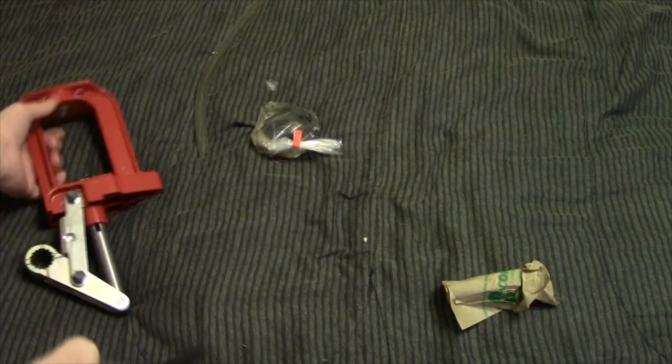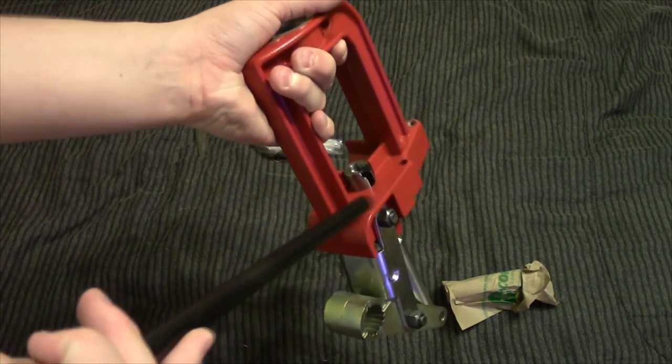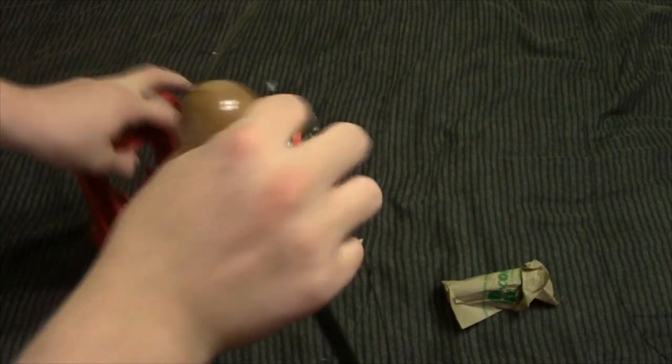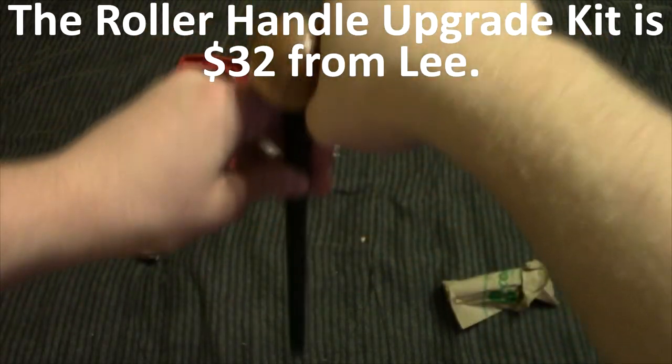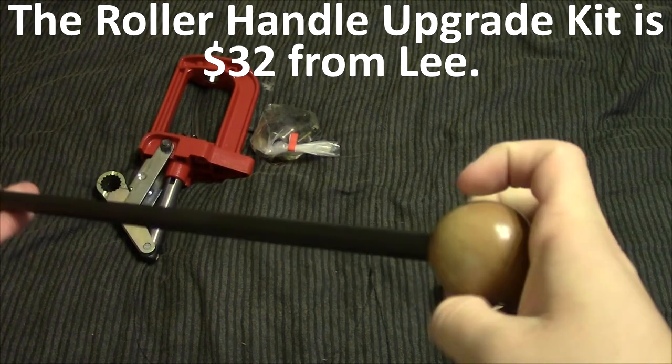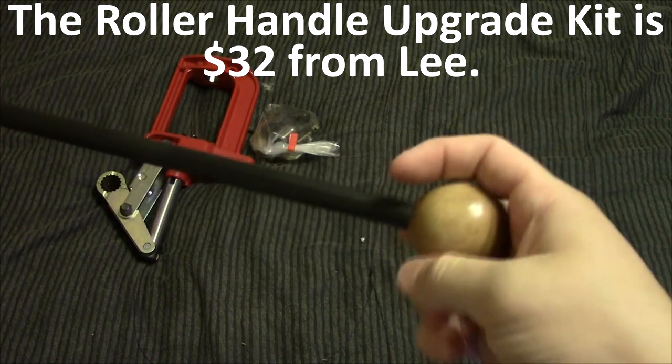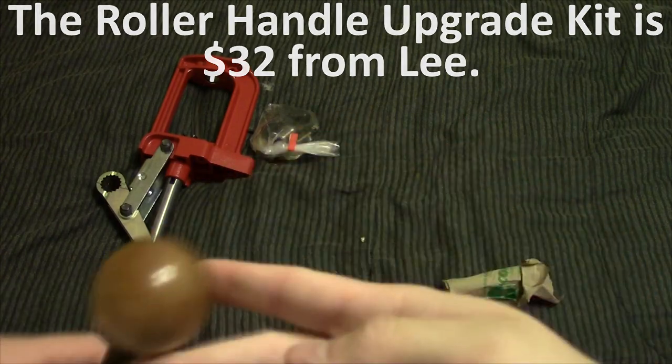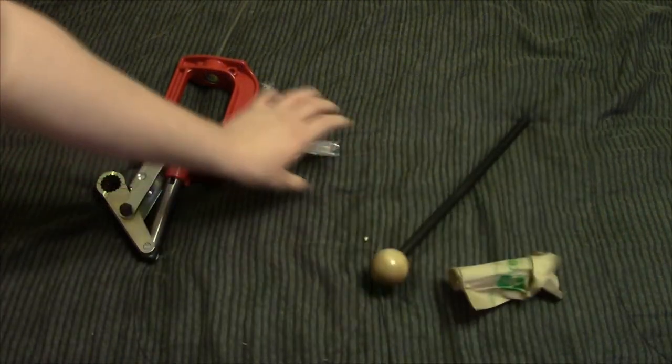I think all models or all versions of this press will come with that. But some of the nicer ones do have like a crank handle that you hold down here and it just rotates in your hand, which I think would be more ergonomic than this. So I'd assume you can probably order that off of Lee's website if you wanted to. Then I might actually end up doing that.